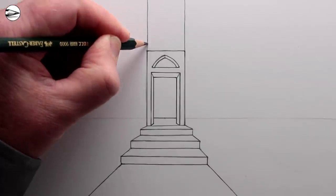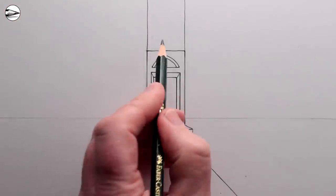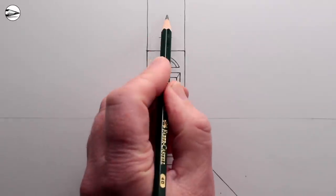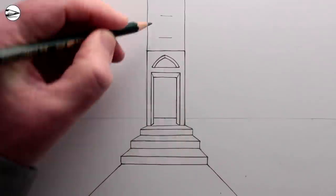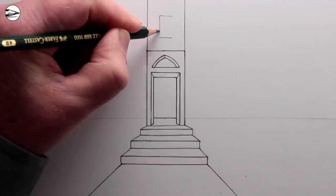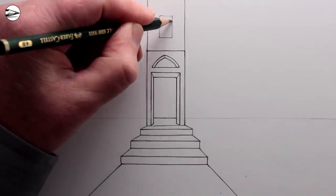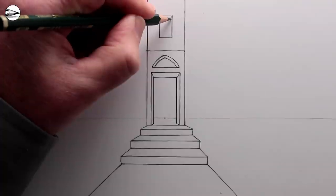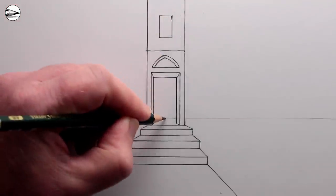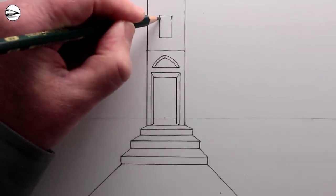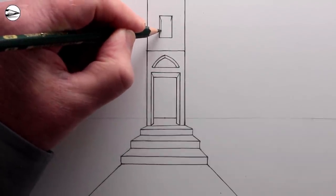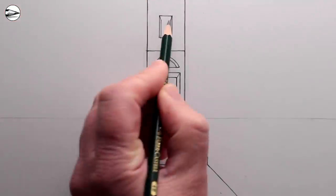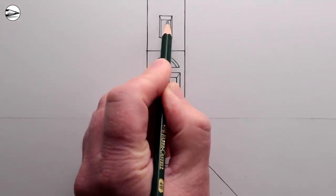Next I think I'll add a small rectangular window above the door frame. Now this window is above the horizon line so we're looking up upon it, and therefore we can give it a thickness — we'll be seeing the left and right side of the window and the top. To do that we need a receding line from the top right and top left of the window going towards the vanishing point, two vertical lines either side, and then a horizontal line at the top.